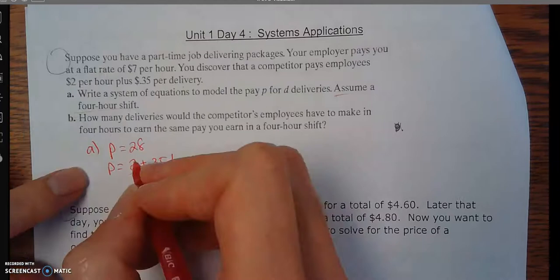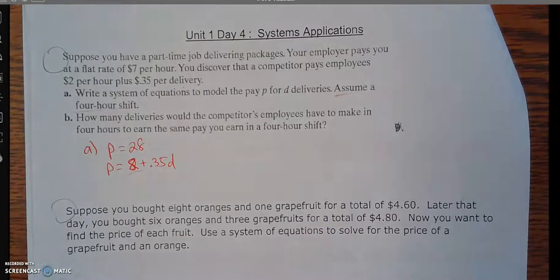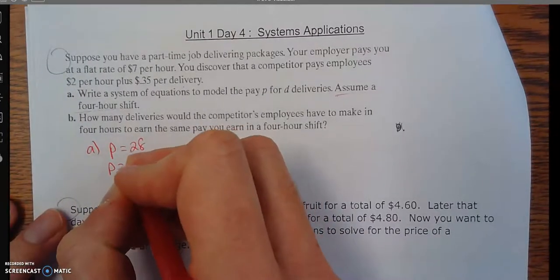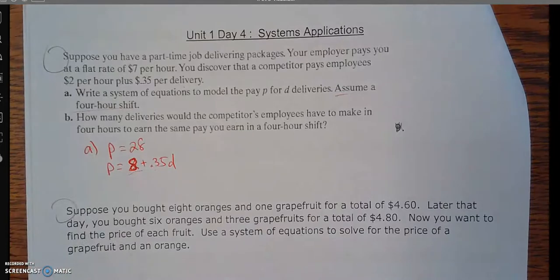There is no other variable. It doesn't depend on delivery, so there's not a second variable there. Now the competitor, they pay you $2 an hour plus $0.35 for every delivery. So there, I'm sorry, $2 an hour for four hours, so that'd be $8. So now, number two, how many deliveries would the competitor's employees have to make in a four-hour shift to make the same pay you make in a four-hour shift? We're going to assume, or we want to find out when is the pay equal.